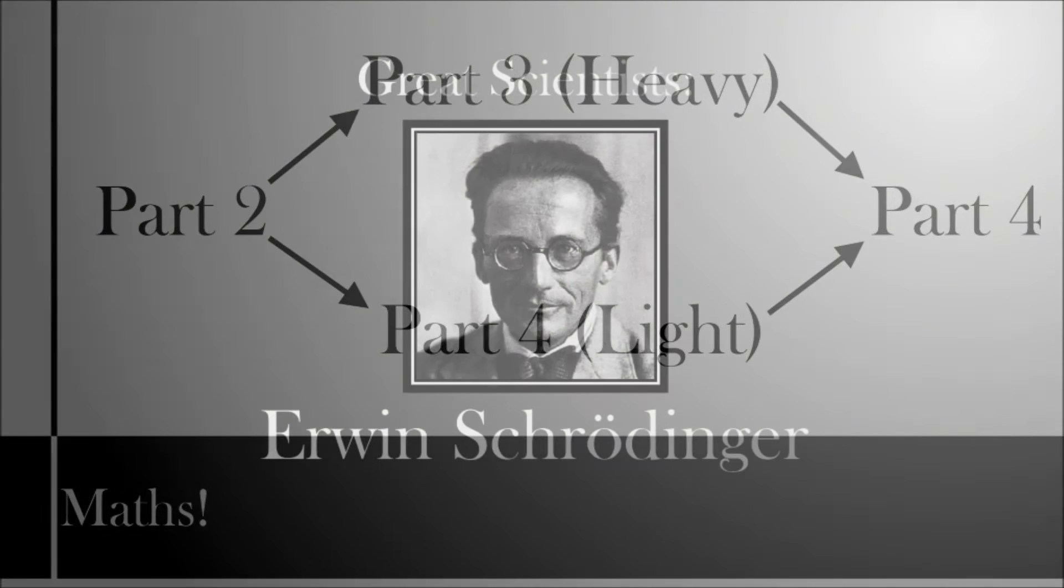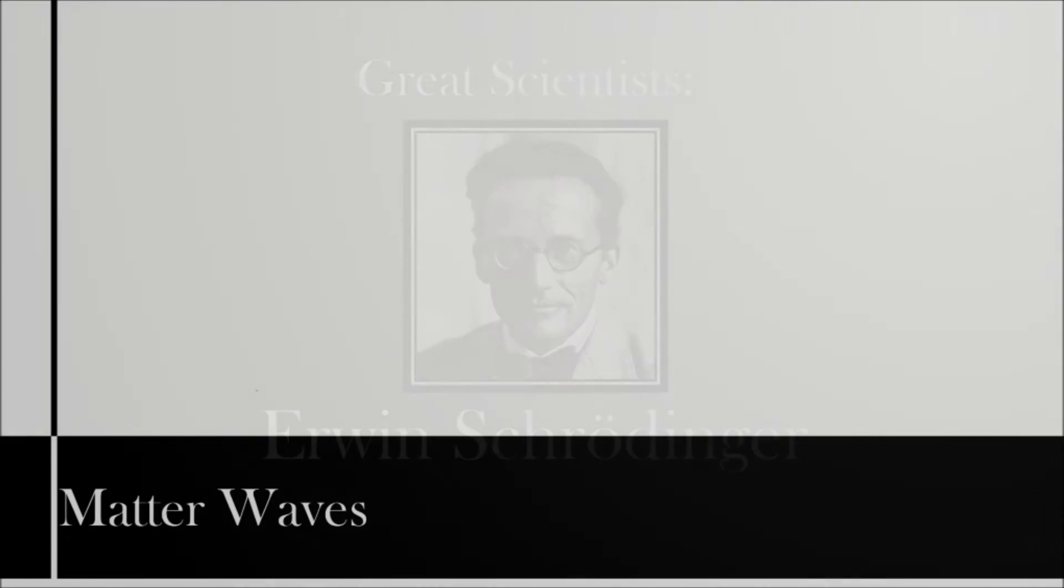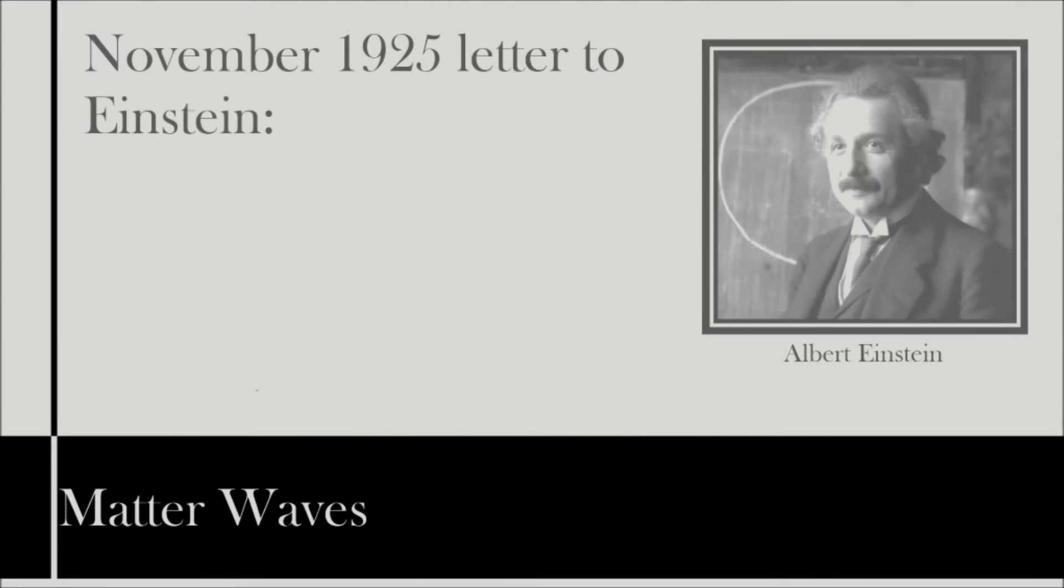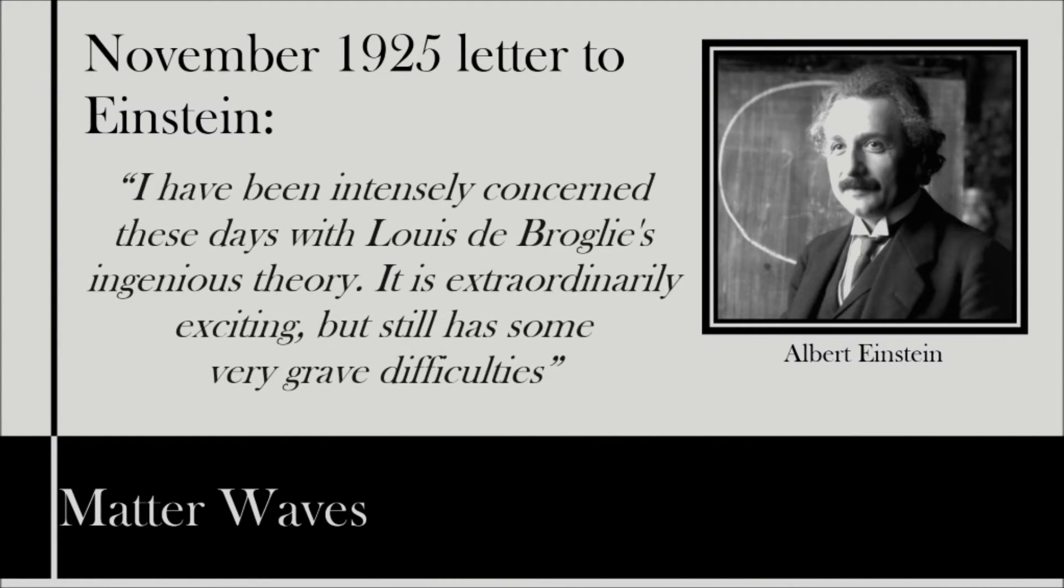At the end of the previous part, we left Schrödinger reading the thesis of Louis de Broglie, wherein de Broglie outlined his theory of electron waves, which would ultimately lead to the idea of matter waves. In a November 1925 letter to Albert Einstein, Schrödinger wrote, I have been intensely concerned these days with Louis de Broglie's ingenious theory. It is extraordinarily exciting, but still has some very grave difficulties.